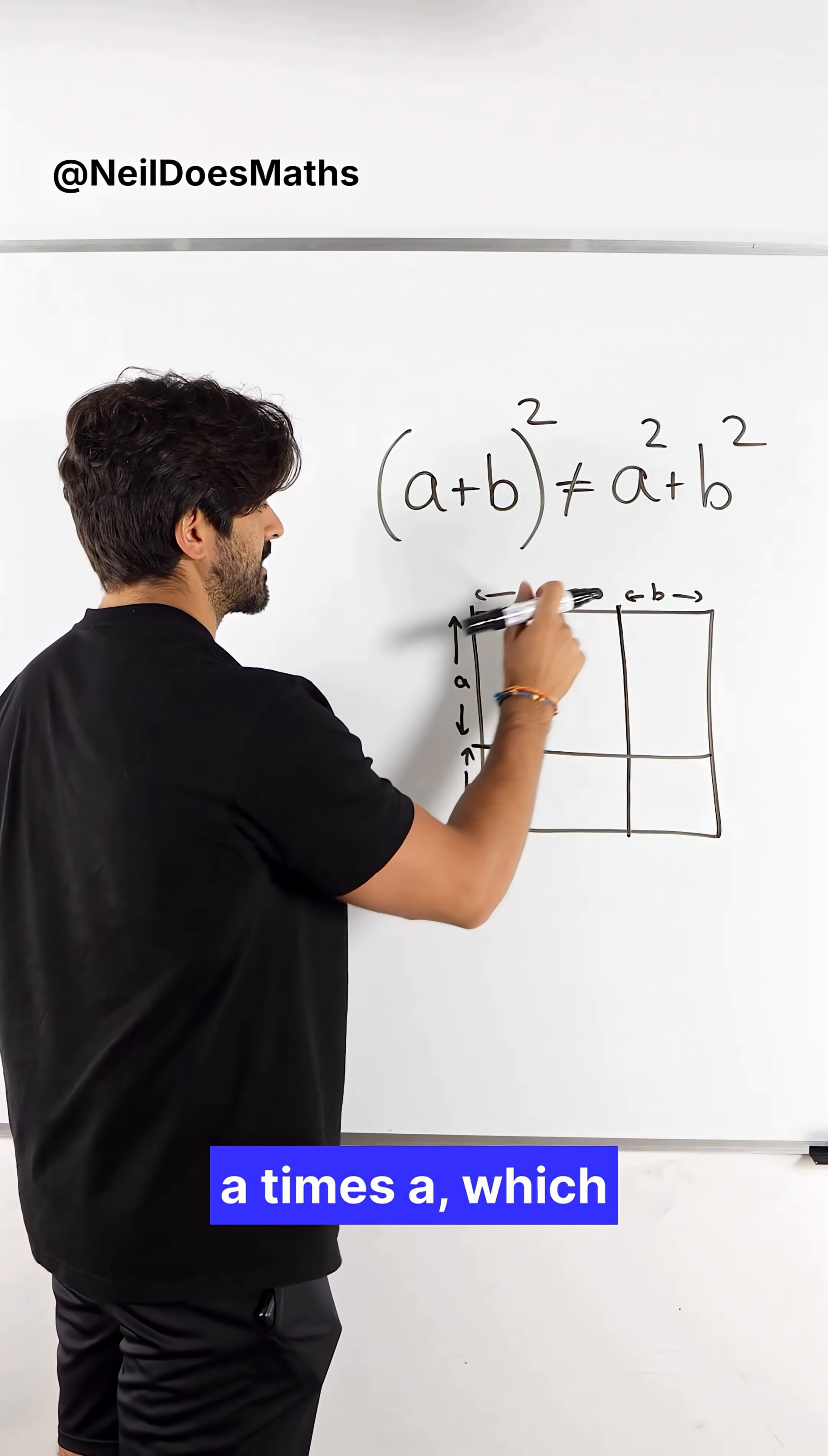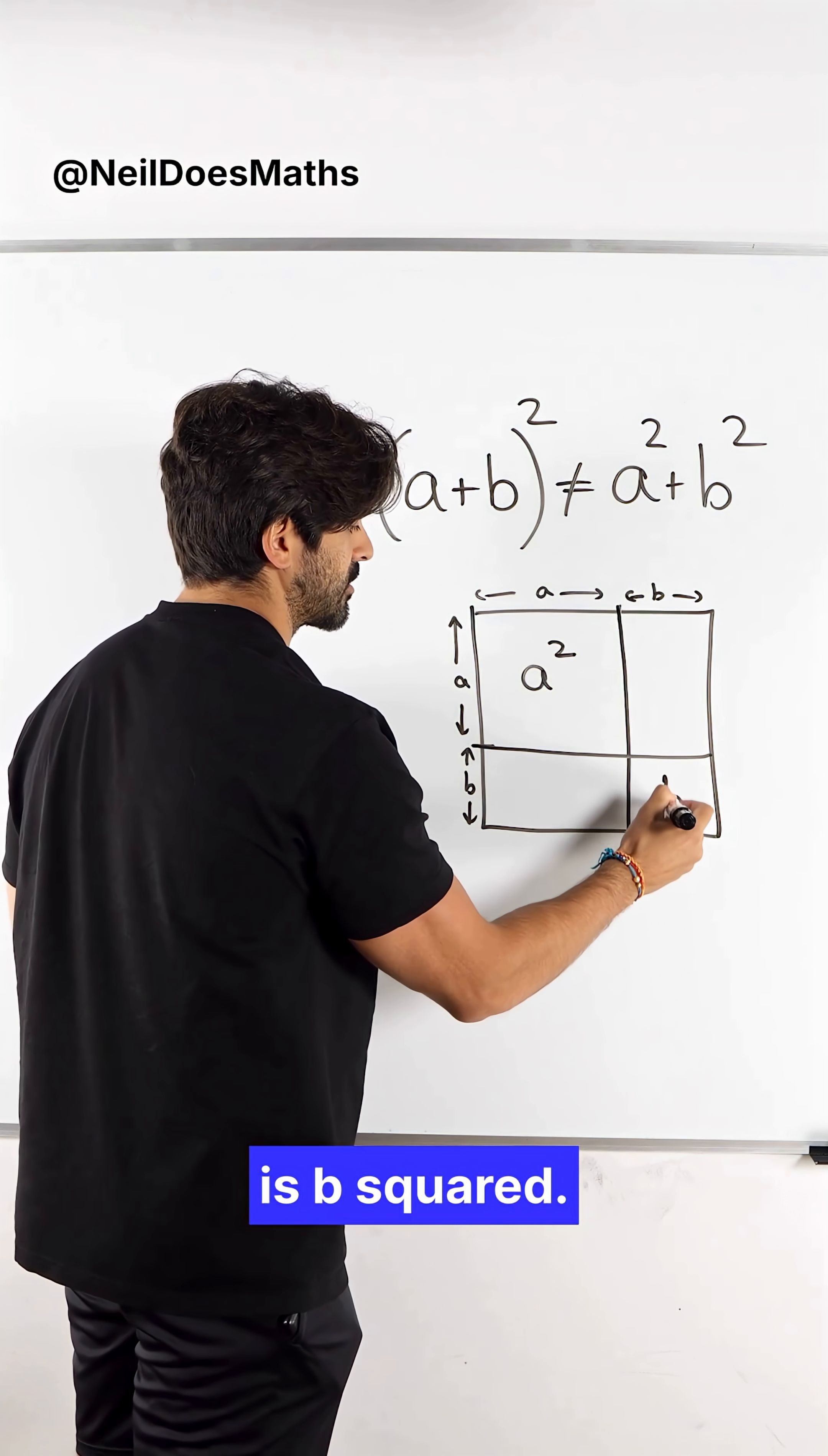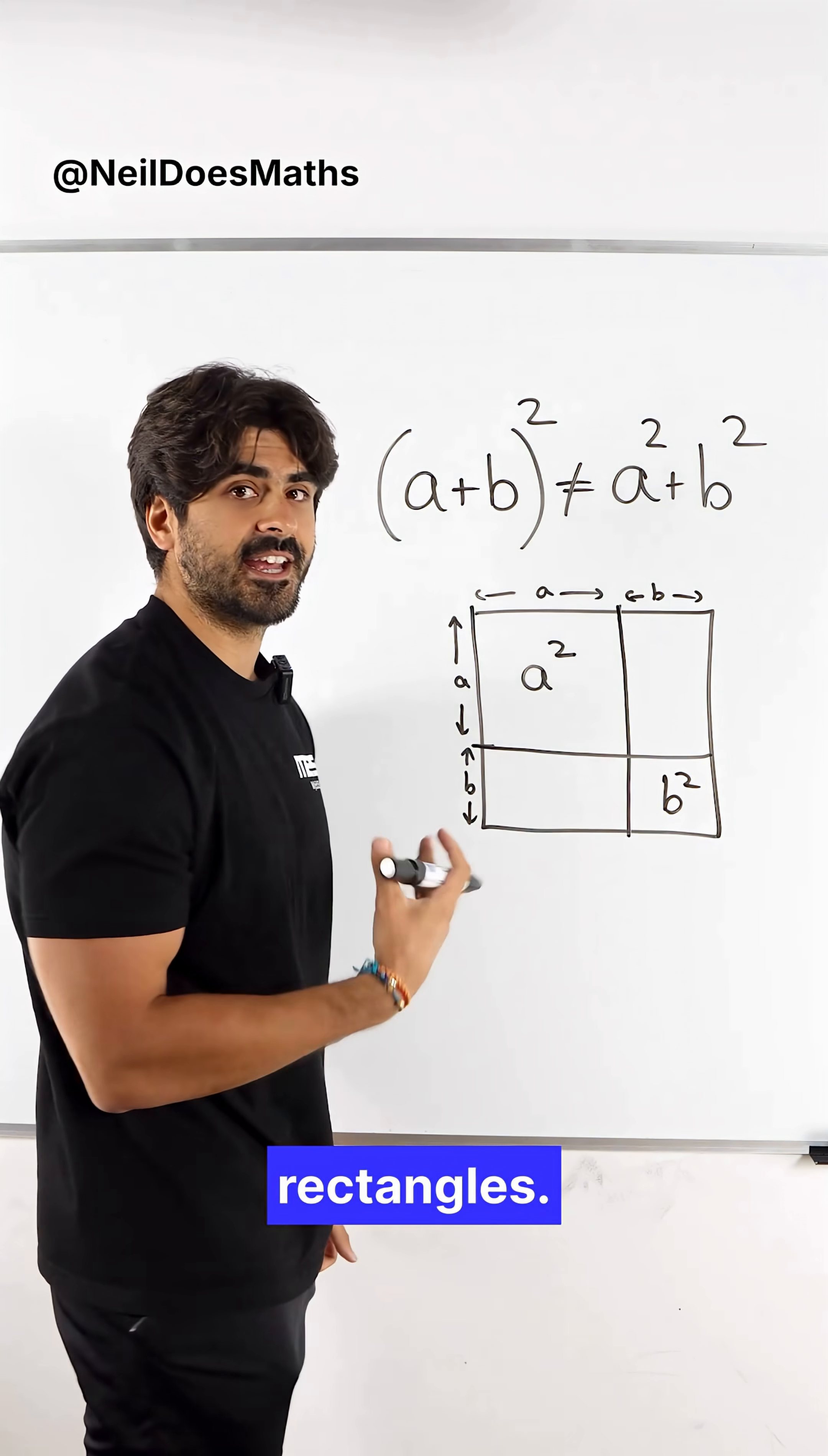The area of this square will be a times a, which is a squared. The area of this square will be b times b, which is b squared. So there's your a squared plus b squared, but you'd be forgetting about these two rectangles.